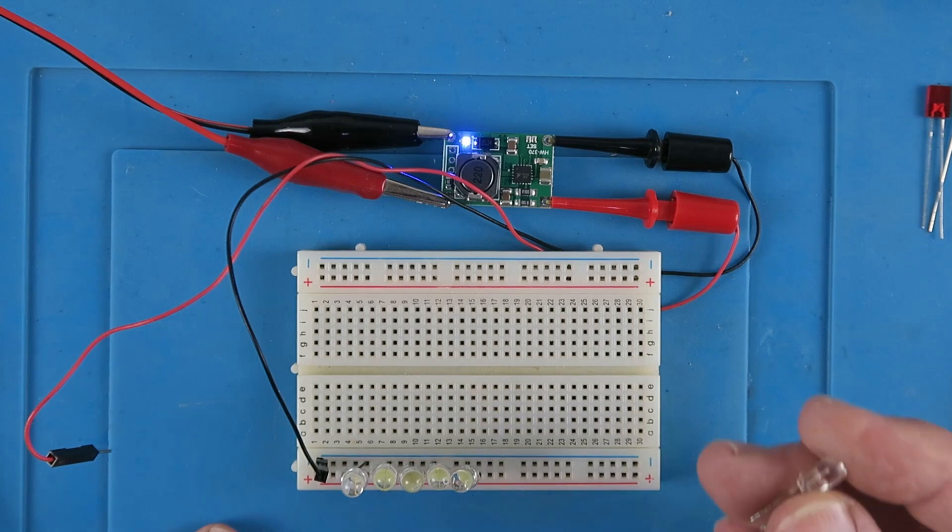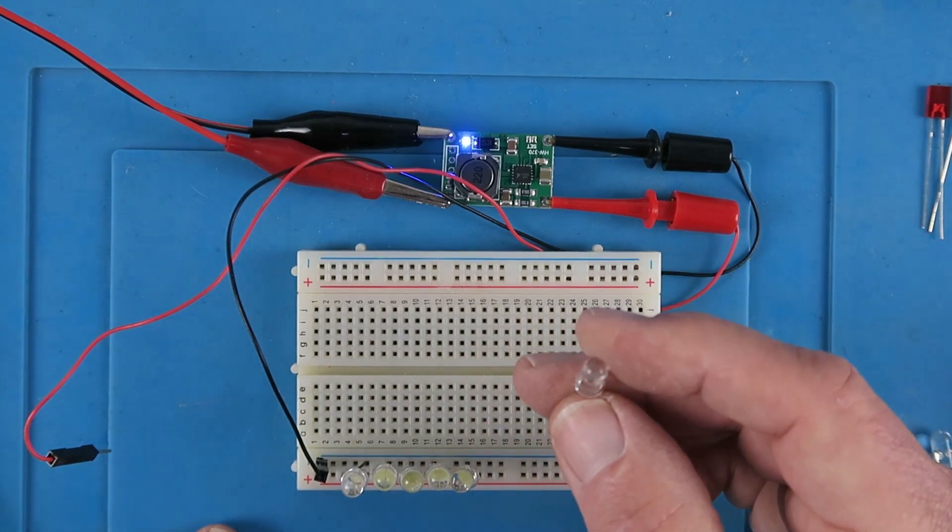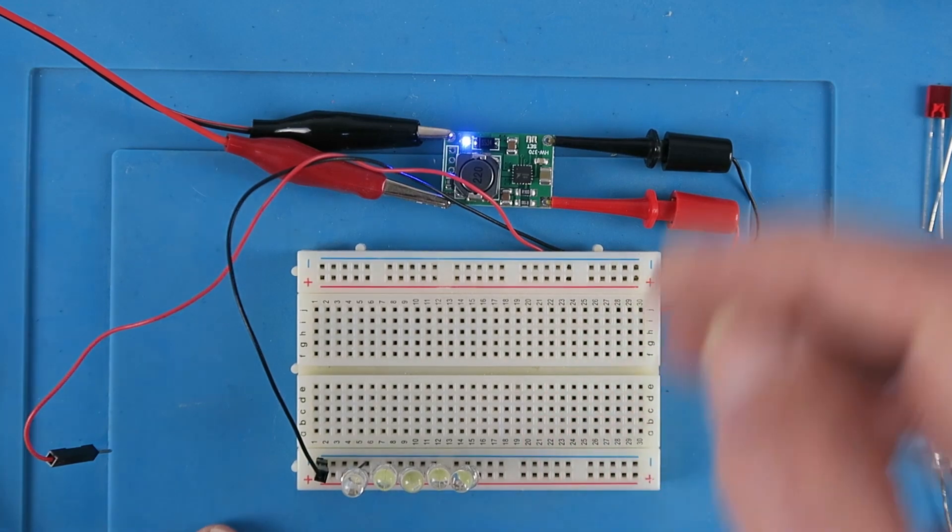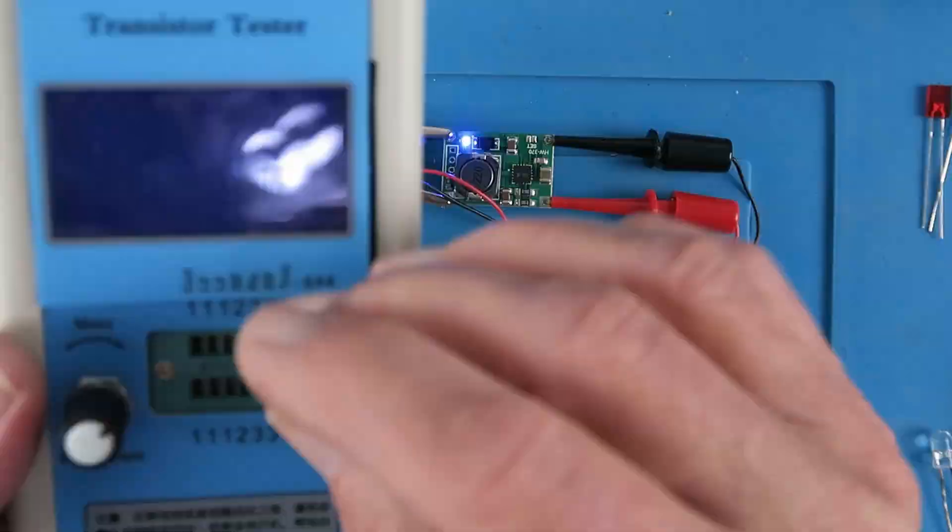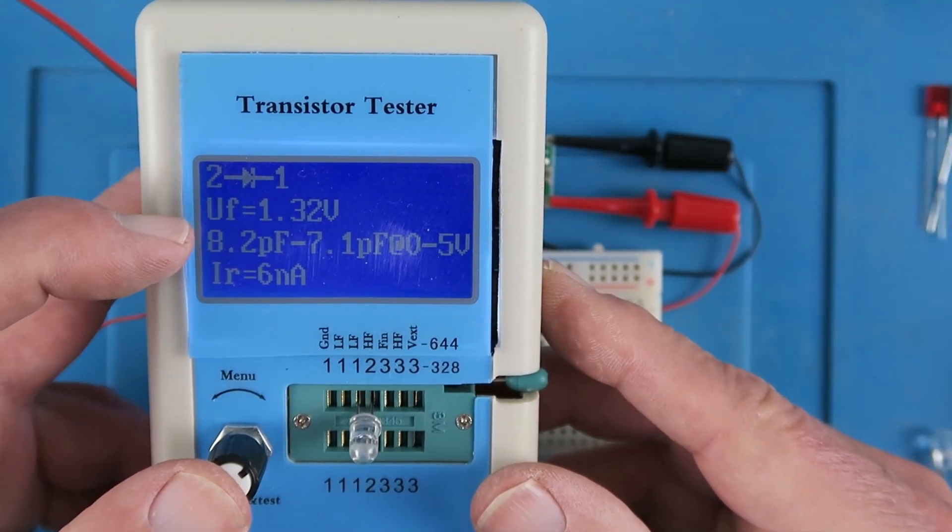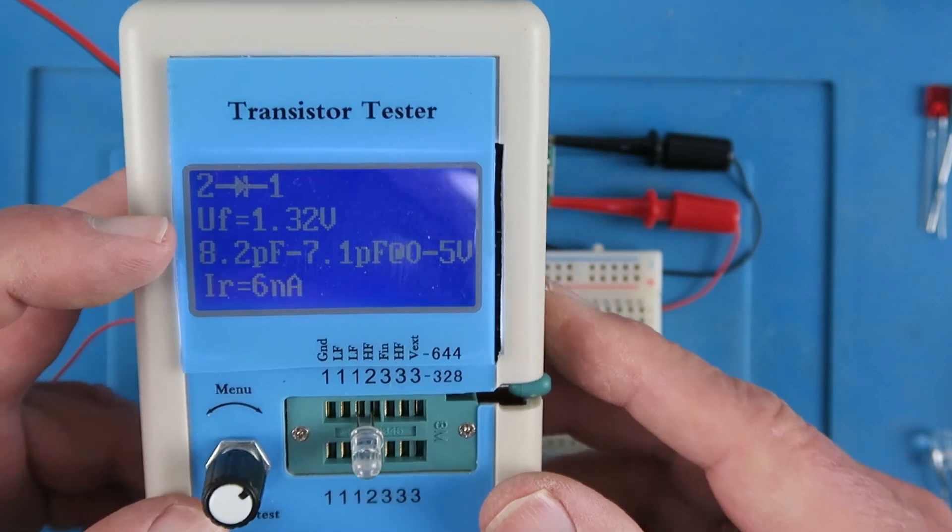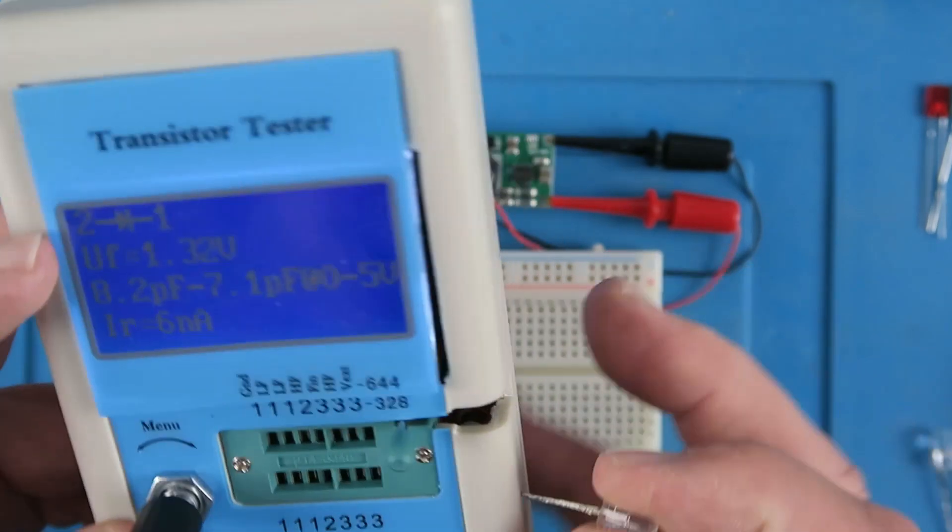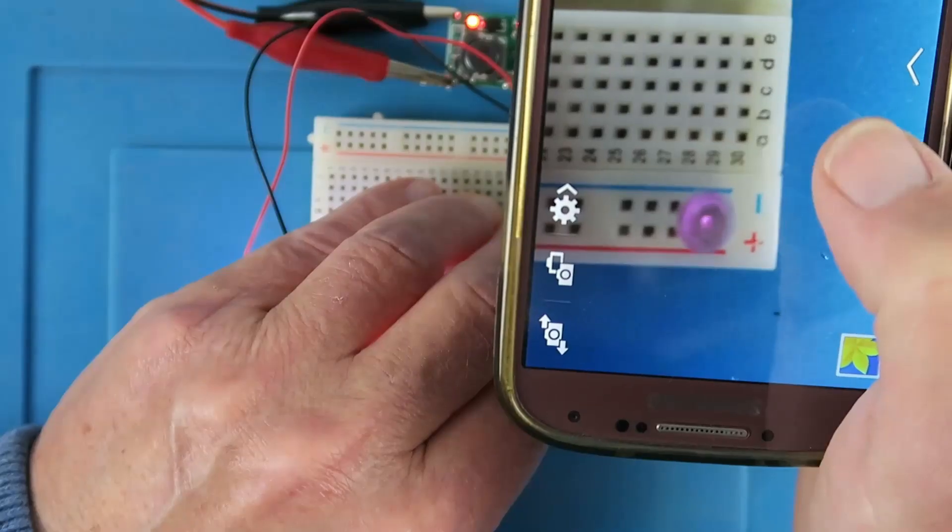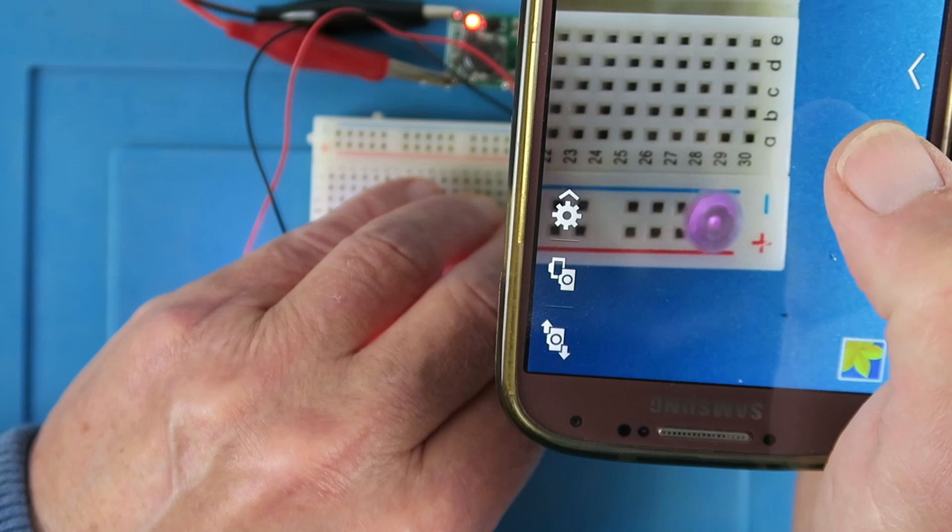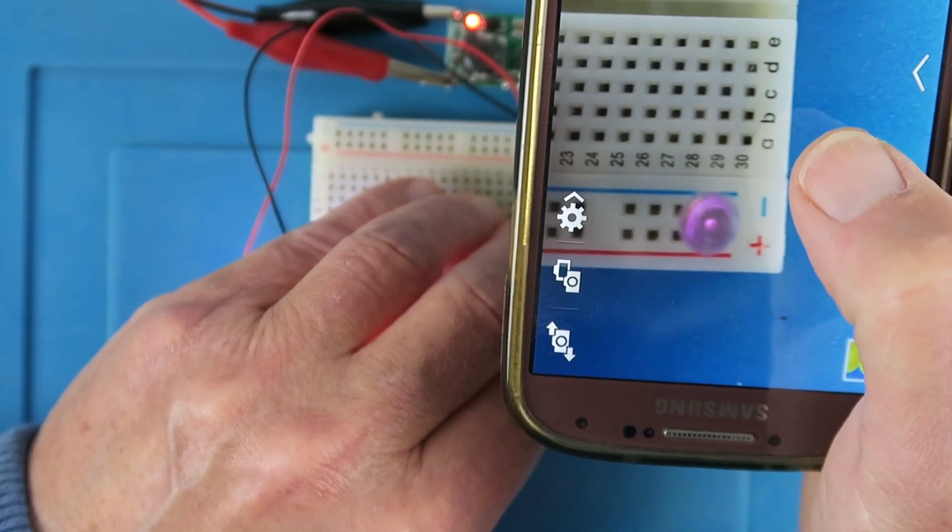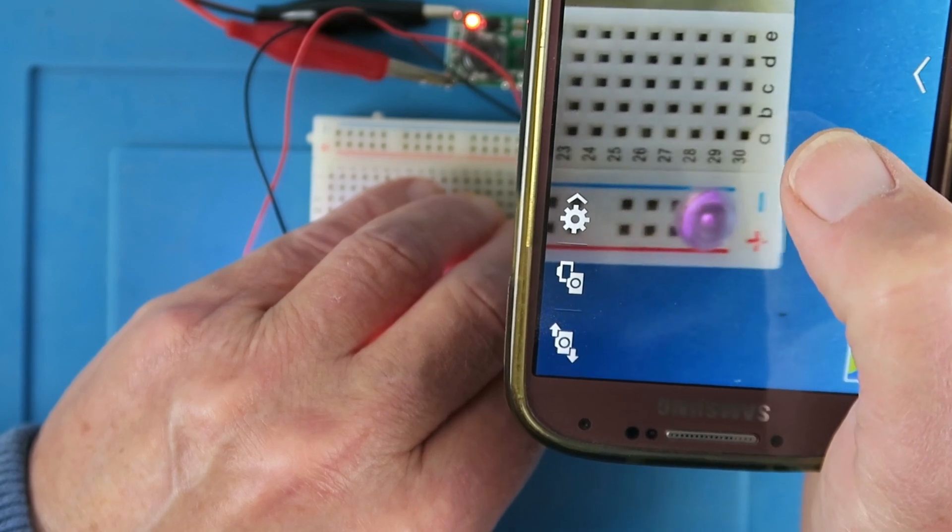Just as an aside, one of them didn't light, and you might assume that it's a faulty component, but if we do test it, we can see, in fact, that it is identified still as a diode with a forward volt drop of 1.32 volts. So what's going on here? This guy is an infrared LED. Here we can see that the infrared diode is glowing, and that can only be seen, obviously, with a camera. You cannot see it with the naked eye.